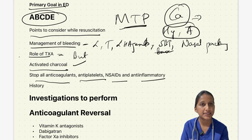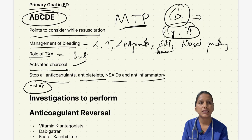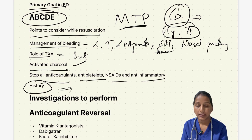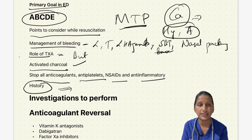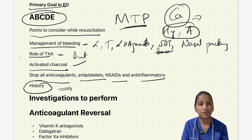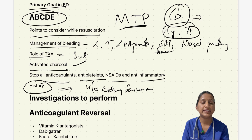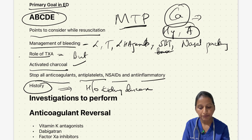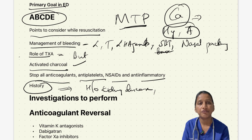A quick history must be taken: what anticoagulant the patient is on and its indication, the dose, and when the last dose was taken. History of kidney disease is important, as it increases the elimination time of DOACs. History of other comorbidities, other antiplatelet use, and concomitant drug use must also be obtained.